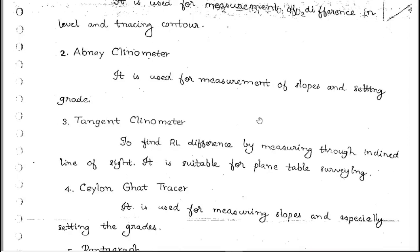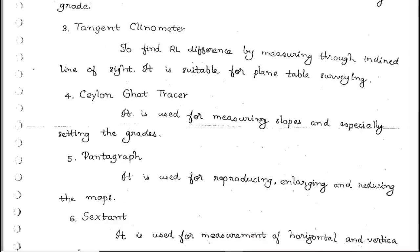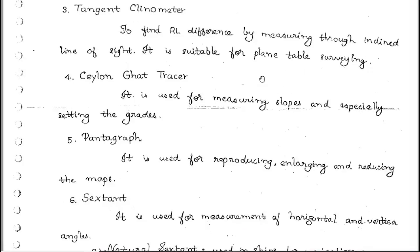The tangent clinometer is used to find out the RL difference by measuring through an inclined line of sight, and it is also suitable for plane table surveying. The Ceylon ghat tracer is used for measuring slopes and especially setting the grades.